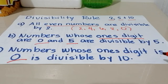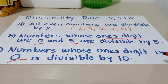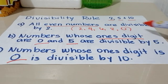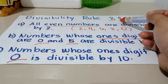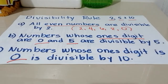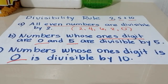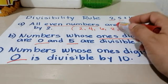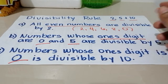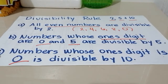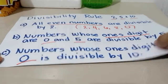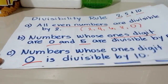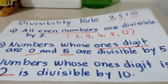Kapag yung number na yun ay nag-e-end lang sa 0, then divisible siya both by 5 and 10. Pero pag yung number na yun ay nag-e-end lang ng 5, ibig sabihin divisible lang siya ng 5. So that's the rule in divisibility rule of 2, 5, and 10. To further understand, let's do some examples.